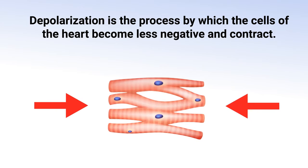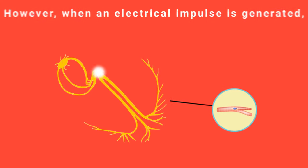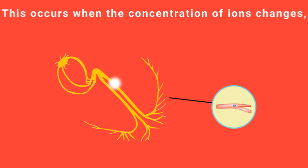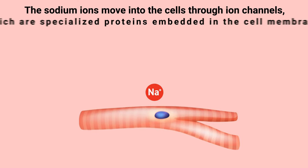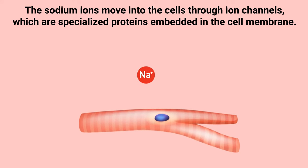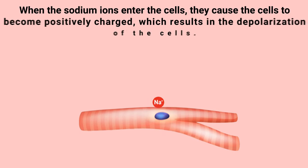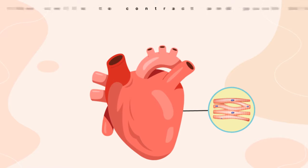Depolarization is the process by which the cells of the heart become less negative and contract. When the cells are at rest, they are negatively charged and polarized. When an electrical impulse is generated, these cells become depolarized as sodium ions rush into the cells through ion channels — specialized proteins embedded in the cell membrane — causing the cells to become positively charged.